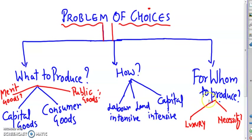For whom to produce relates to the theory of distribution. Whatever we are producing — does it have an equitable distribution? Do we produce more of luxury goods or necessities? These problems of choices are answered by different economies, and as they are answered, it decides on their economic system.